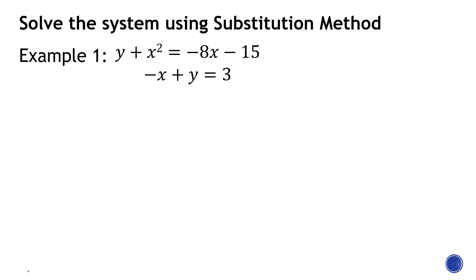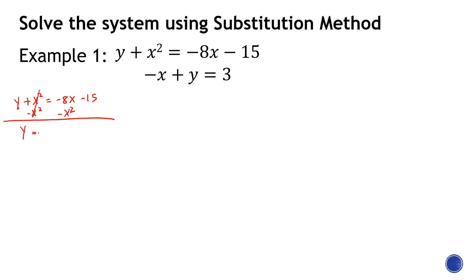We need to solve this system using the substitution method. The first thing we need to do is make sure that both equations are expressed in terms of y, meaning we should isolate y on either side of the equation — we usually isolate it on the left side. As you can see, both equations here are not expressed in terms of y. In the first equation — the quadratic — I will subtract x-squared from both sides.